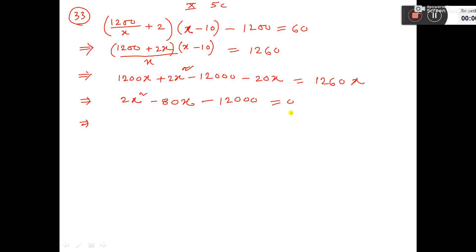Now, divide the whole equation by 2. So, it will be x square minus 40x minus 6000 equal to 0.